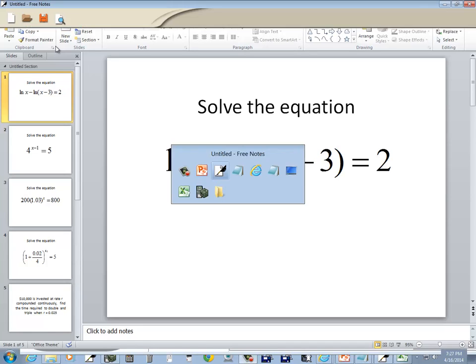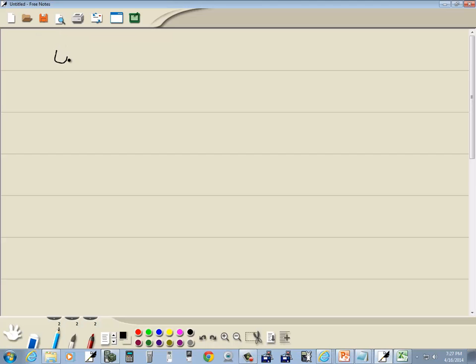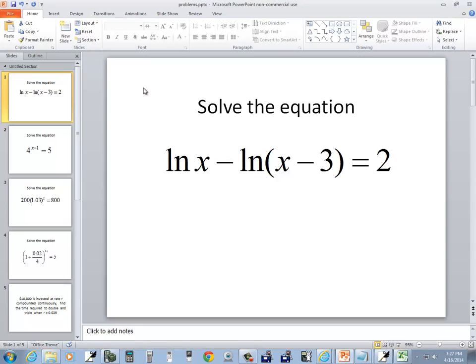Let's take a look at this problem. We've got natural log of x minus natural log of x minus 3 is equal to 2, and we want to solve it.